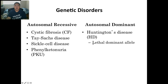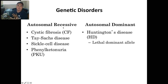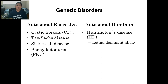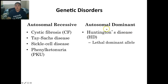Some disorders they test for: cystic fibrosis, Tay-Sachs disease, sickle cell disease, PKU, and Huntington's disease. Autosomal recessive means a genetic disorder only occurs if you have double recessive alleles. Some of us carry the gene for cystic fibrosis, but since it's recessive we don't express it — only a child with double recessive will express it. Huntington's disease is unusual in that having double dominance is very bad.